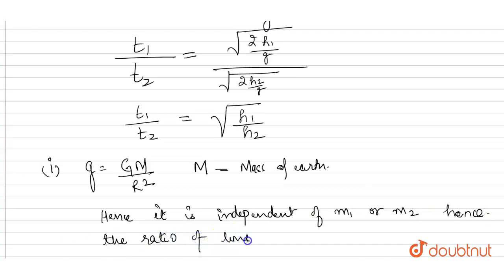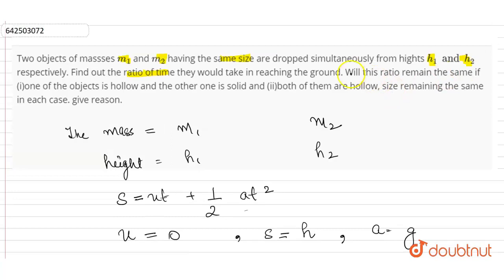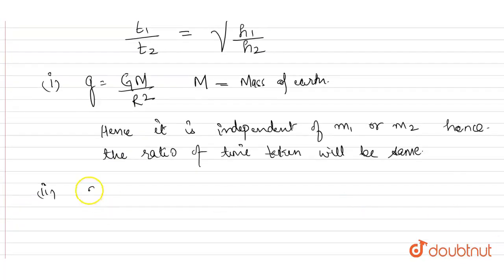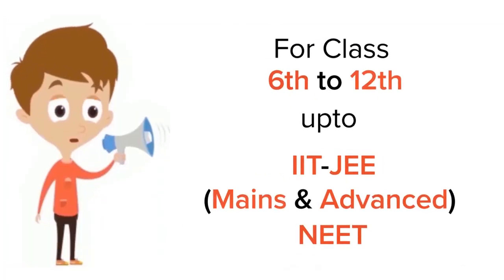Next case. In the next case it is given to us: the question is both of them are hollow and size remaining the same. So if bodies are hollow, if the bodies are hollow, then also the ratio will remain same, that is t1/t2 = √(h1/h2).